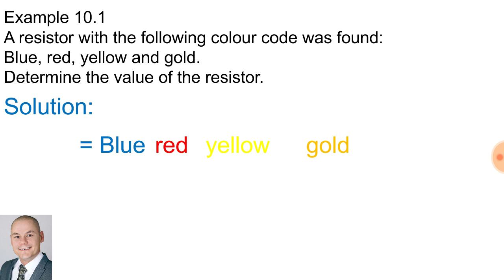Blue would be six, red would be two, yellow being four and the number of zeros, and gold being the tolerance of five percent. That would give us 62 and four zeros and five percent, and that is the same as 620,000 ohms with a tolerance of five percent.